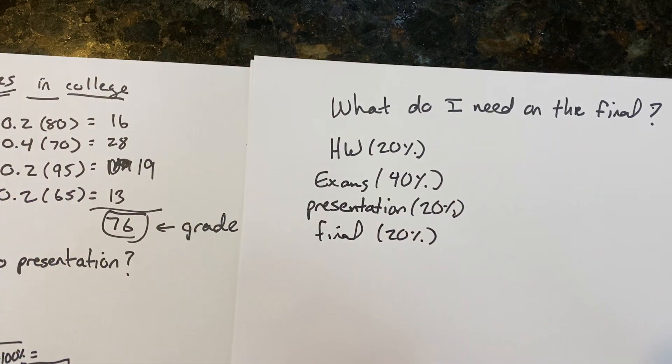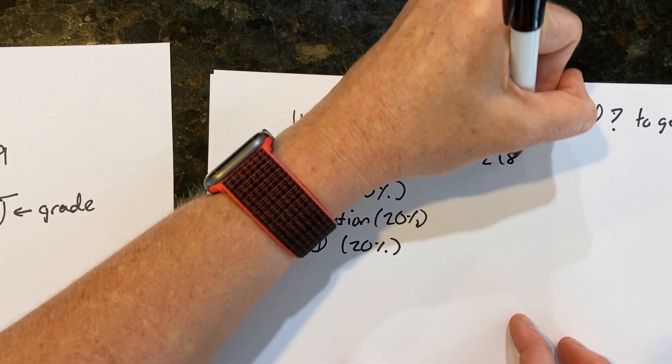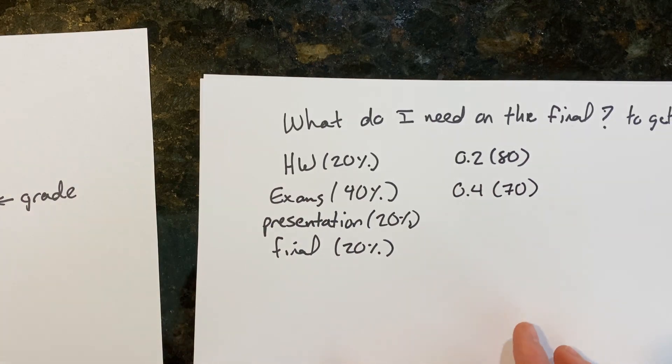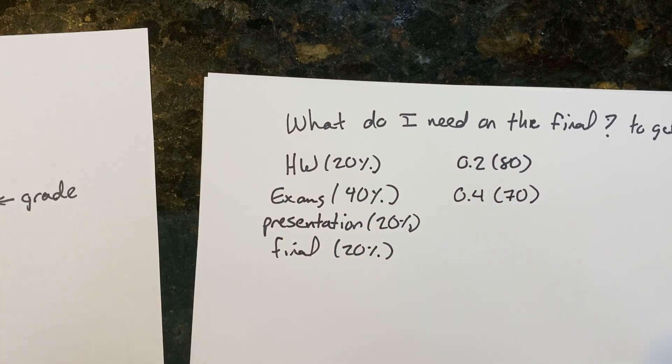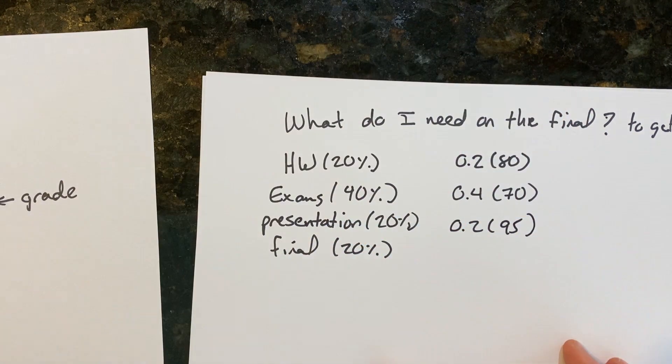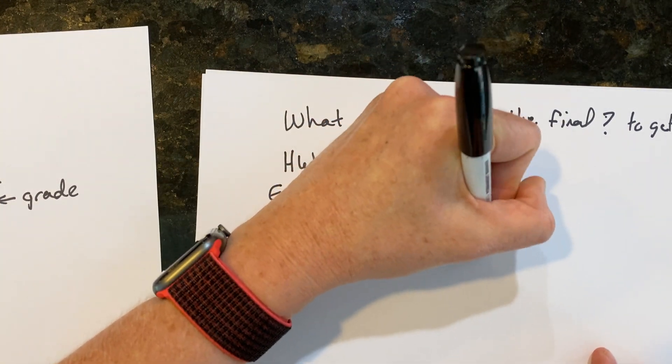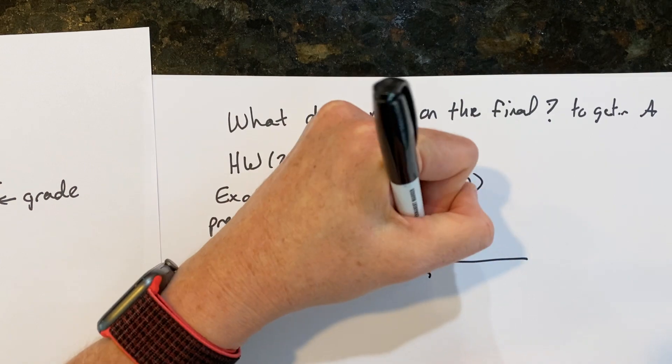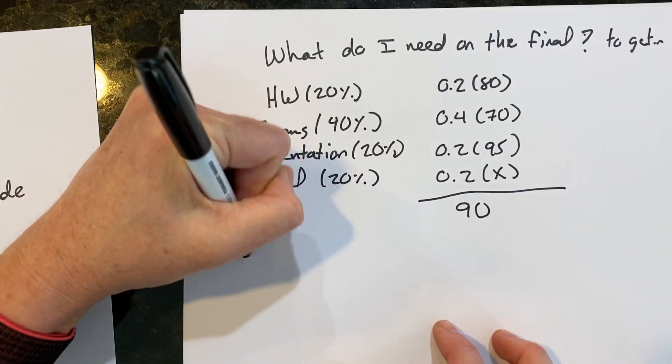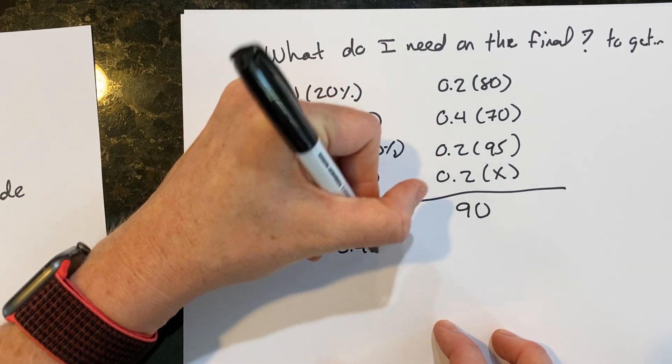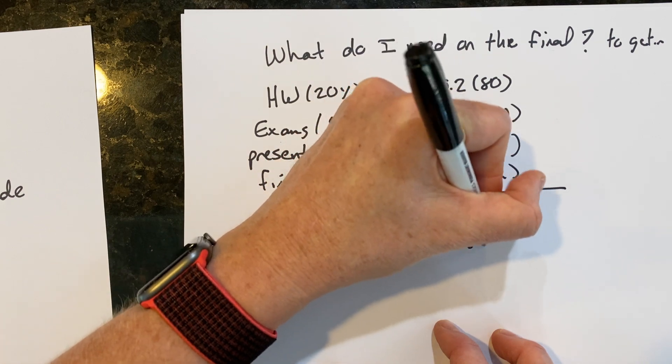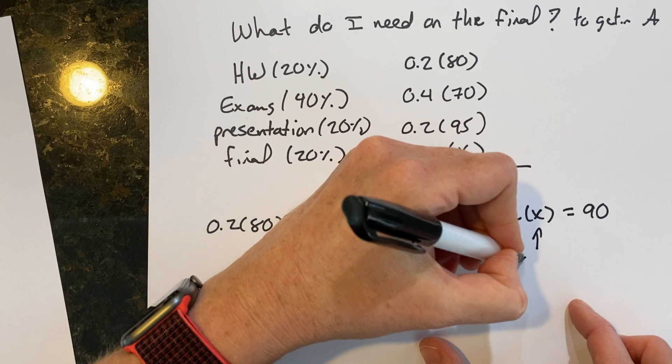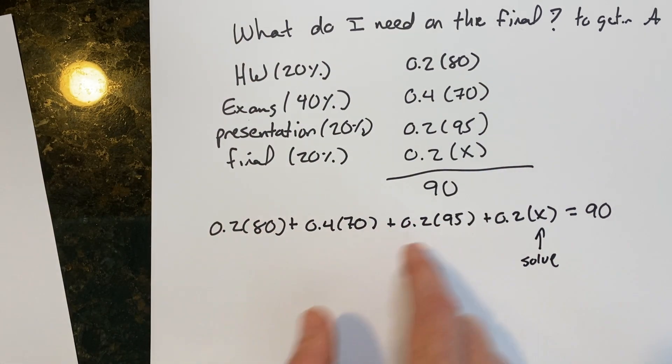Now let's go back and do the exact same stuff. So let's say on your homework 0.2 times 80, your exams, you finished them all by now, let's say, and even if you didn't, you could break them out individually and use this same concept. Your presentation, 0.2 times 95, and your final exam is going to be 0.2 times X. And remember, you want them all to add up to an A. So most classes, an A will be a 90. In other words, what we've got right here is 0.2 times 80 plus 0.4 times 70 plus 0.2 times 95 plus 0.2 times X equals the grade that you want of a 90, and this is what you're going to solve for.